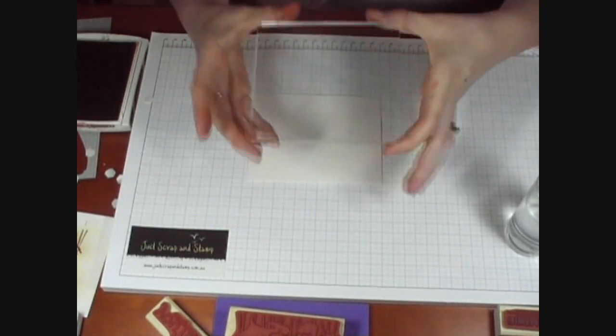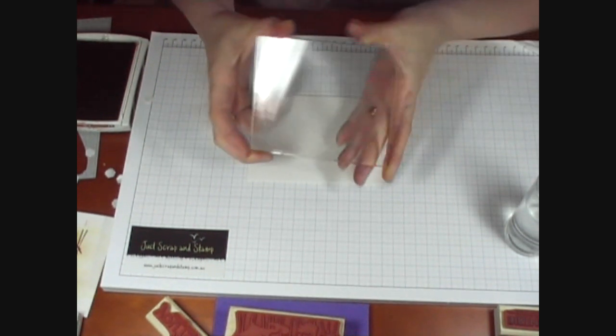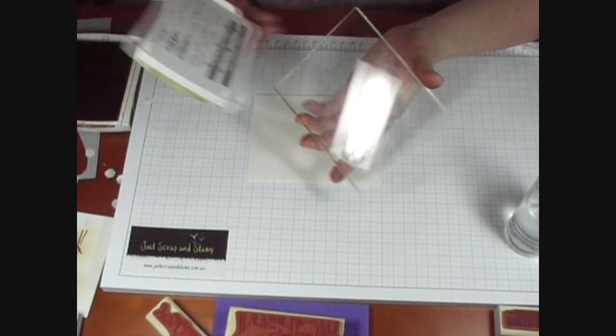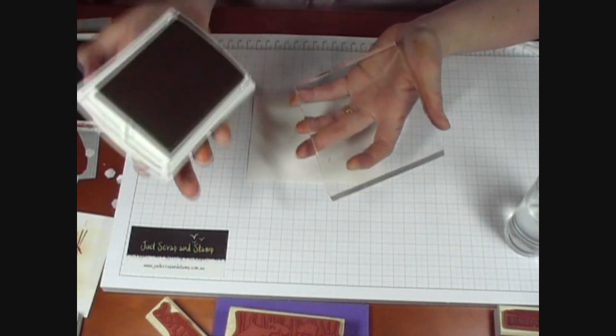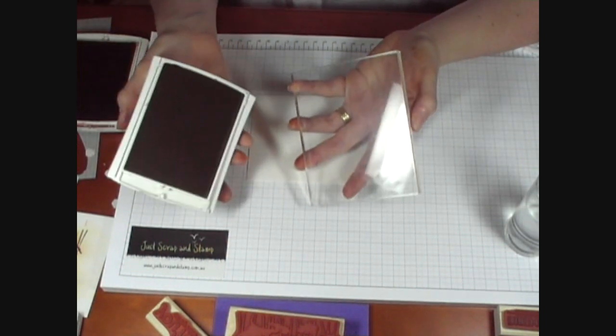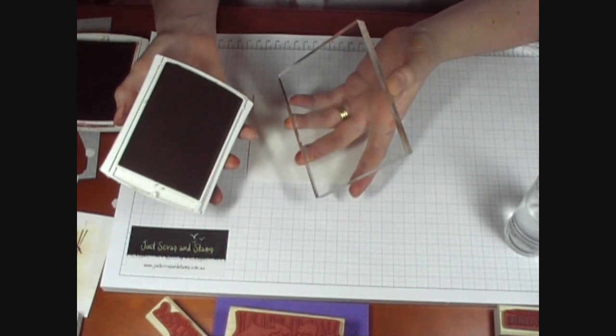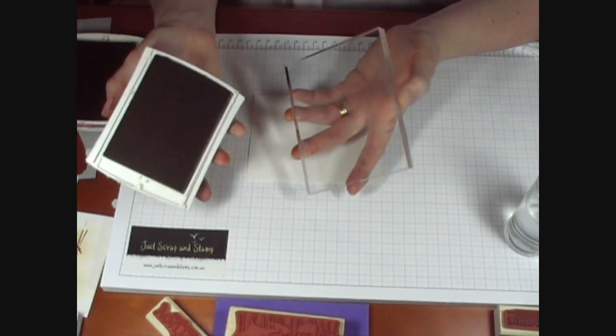To start with, we're just using a basic acrylic block that you use to mount your unmounted stamps on. I'm using some Stampin' Up ink pads today, but any dye-based ink will work with this technique. You can't use a pigment-based ink.